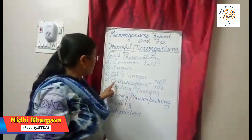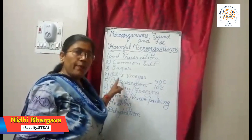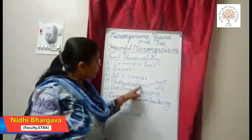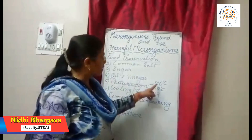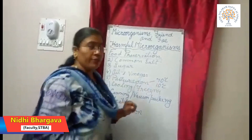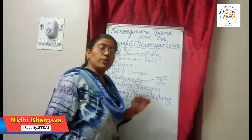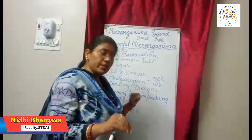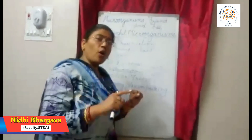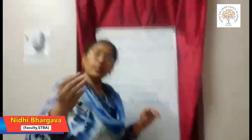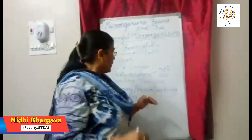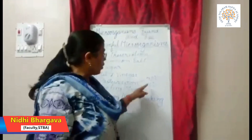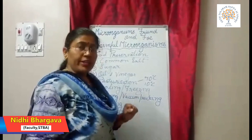The next method is preservation by pasteurization, a particular process used to preserve milk. In this process, milk is heated up to 70 degrees centigrade for 15 to 30 seconds, and then it is suddenly cooled down to 10 degrees centigrade in order to kill the remaining bacteria or germs. This process is called pasteurization and was discovered by Louis Pasteur in 1862.